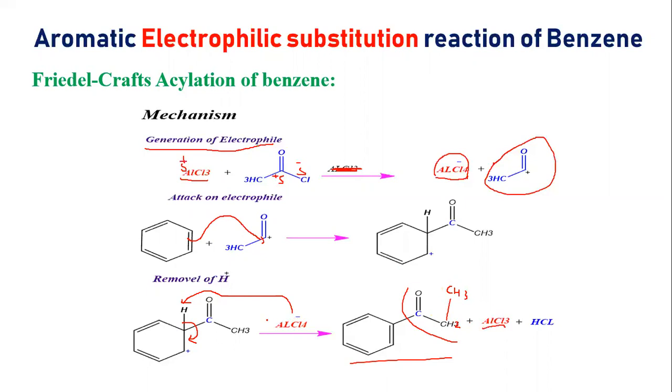AlCl3 will be regenerated when you have reaction complete, and HCl will be removed. So this was the Friedel-Crafts acylation of benzene.